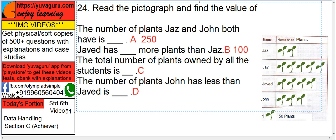The total number of plants owned by all the students is, total 14 images, 14 images multiplied by 50, 14 fives are 70, so 700. Learn tables up to 20 by heart.